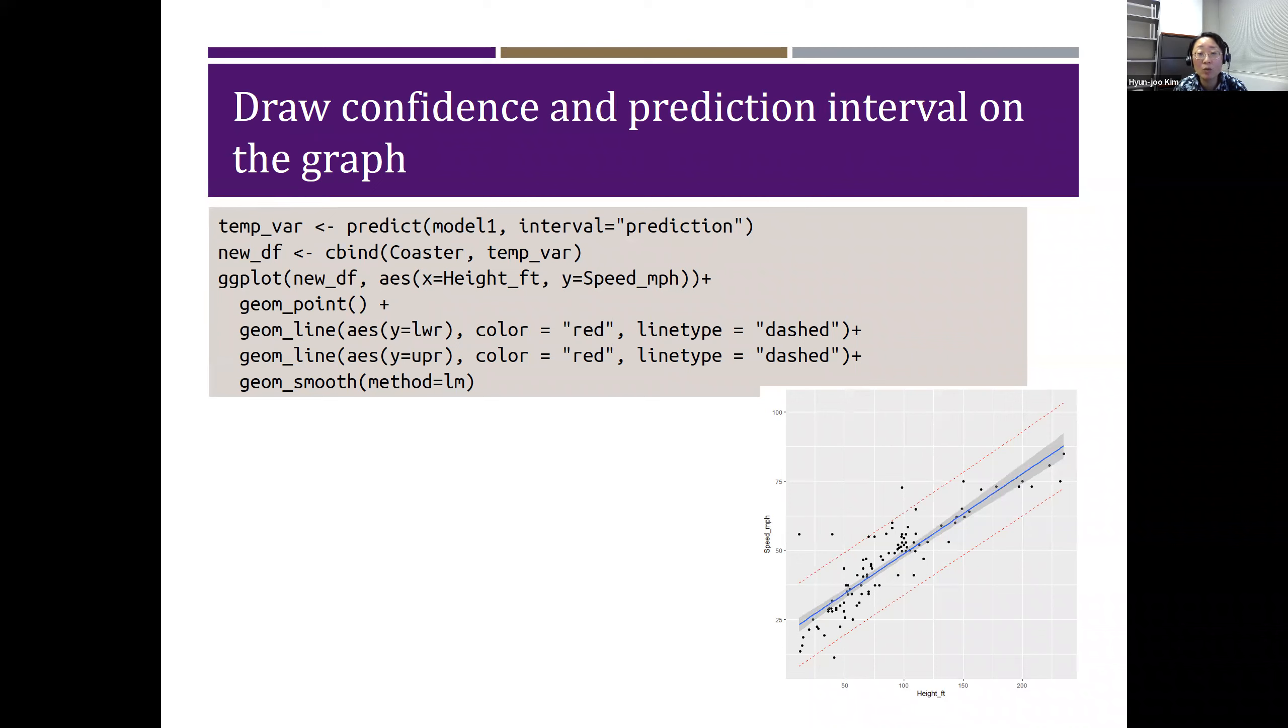We want to draw lower bound and upper bound prediction interval using y equals lwr and y equals upr, upper prediction interval and lower prediction interval. Color red is specified, and line type was chosen to be dashed line.